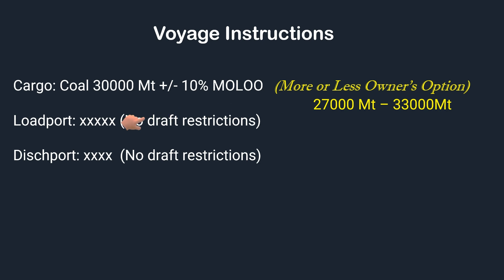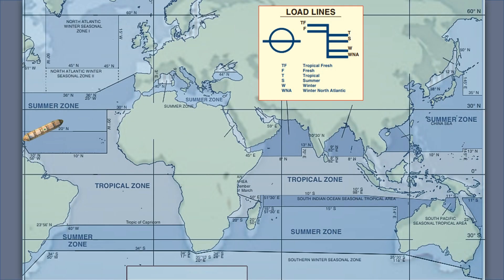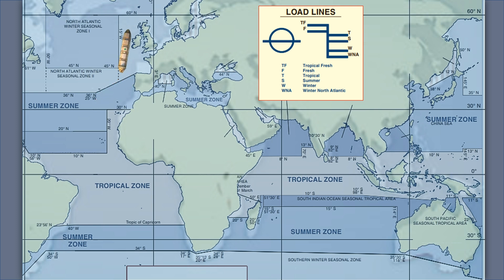The loading and discharging ports have no draft restrictions. Let's assume that based on the load line zones, the ship's entire voyage will remain within the summer zone — this will be our initial scenario. In the next scenario, we'll consider that the loading port is in the summer zone while the discharging port falls within the winter zone.